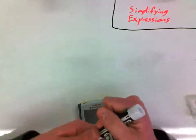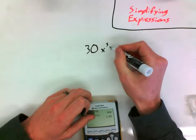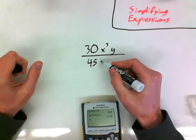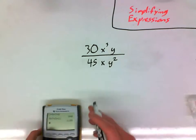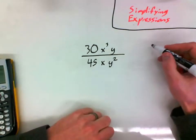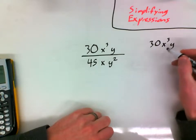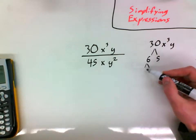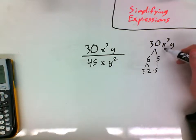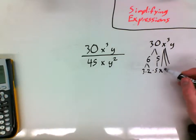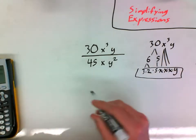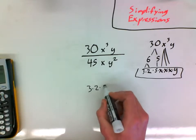So let's look at something more complex. What if we had something like this: 30x to the third y over 45xy squared. Now these two things look really complex and so we're going to separate them. So over here, I'm just going to rewrite 30x to the third y. I'm going to rewrite it in a weird way, I'm going to break it down. So 30 is just 6 times 5 and 6 is just 3 times 2.